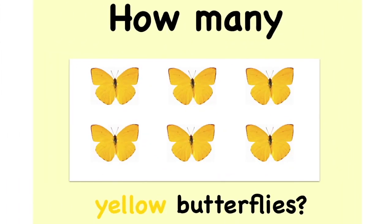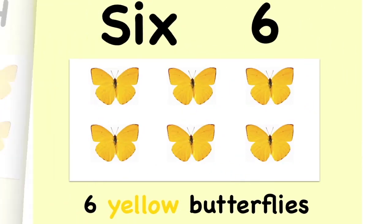How many yellow butterflies? Six yellow butterflies.